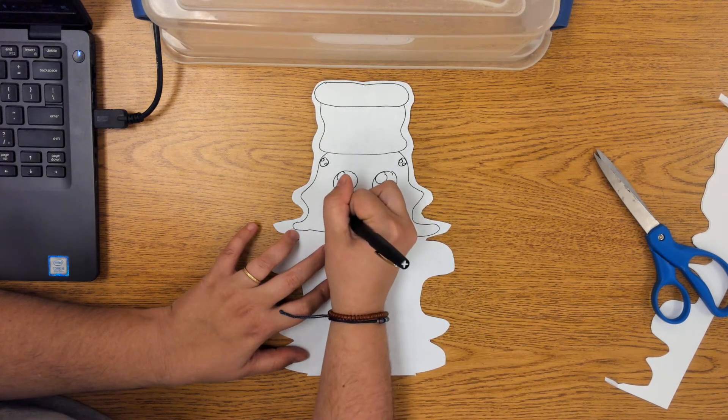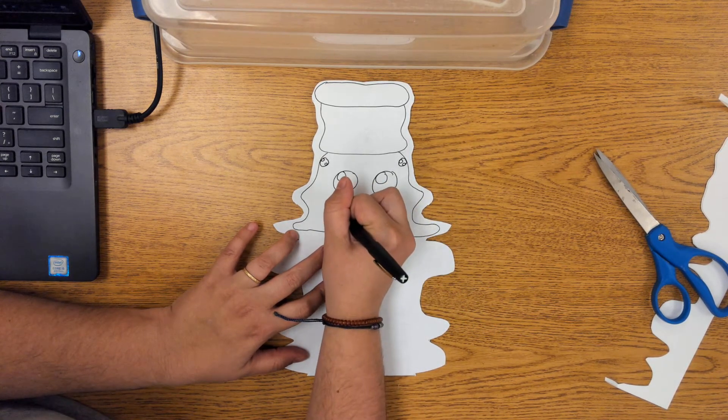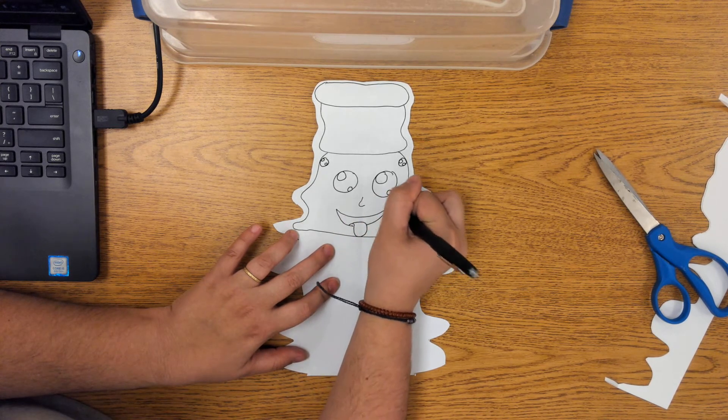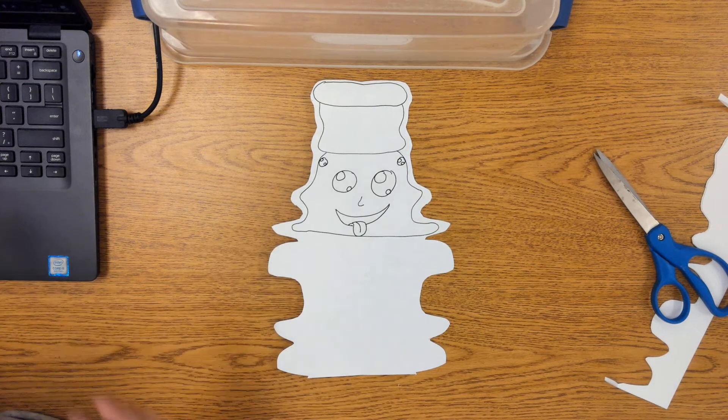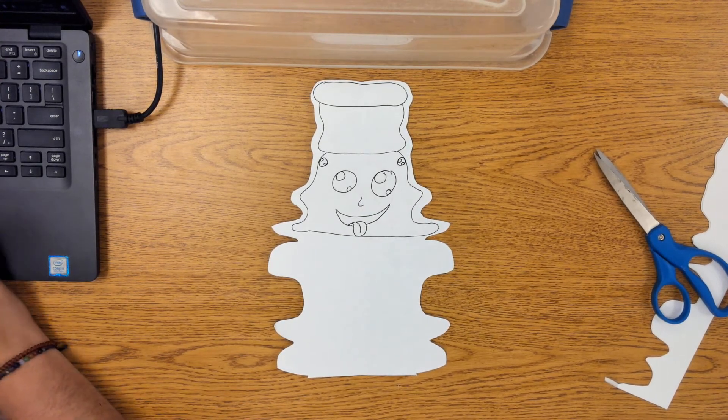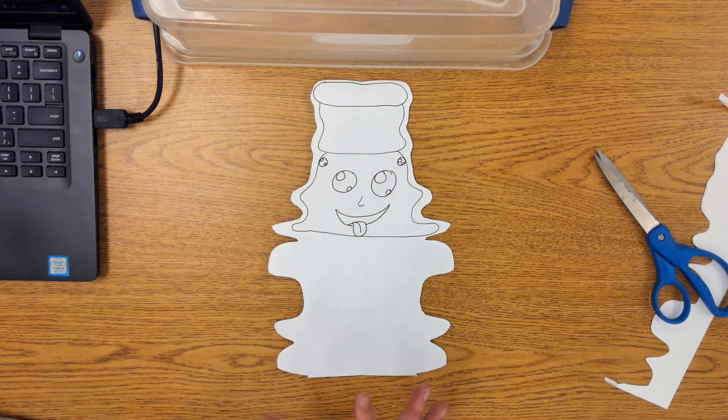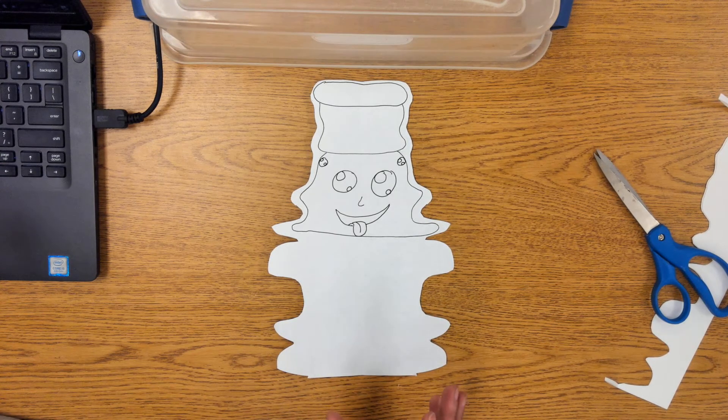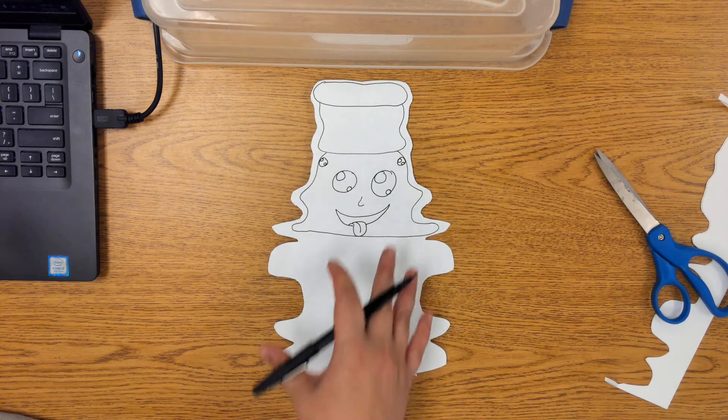You want to fill up the whole monster all the way through on your paper, filling this all up with all kinds of different crazy details and designs. And then once you finish filling up yours, you'll be able to color in your creature.